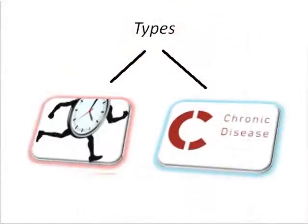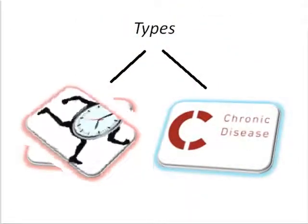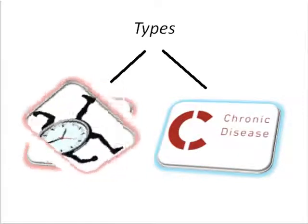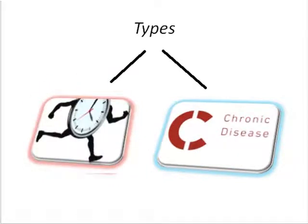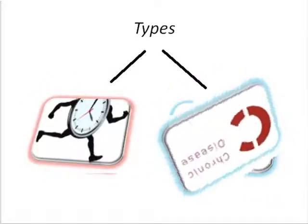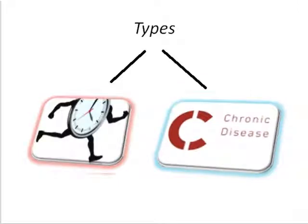There are two types: acute and chronic. Acute infection is characterized by the presence of neutrophils, and chronic by chronic inflammatory cells, especially plasma cells.